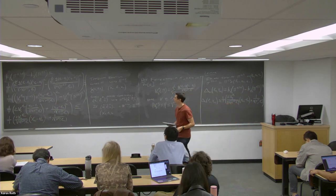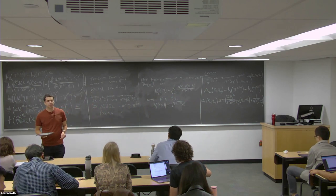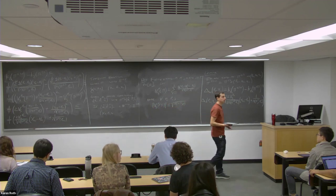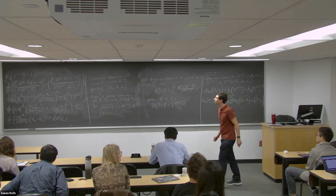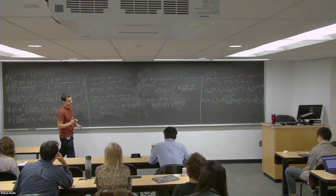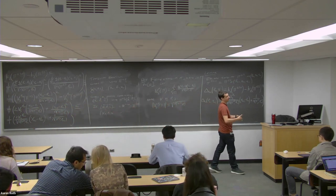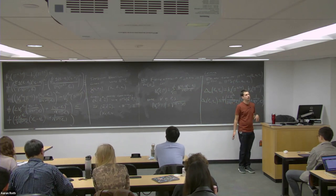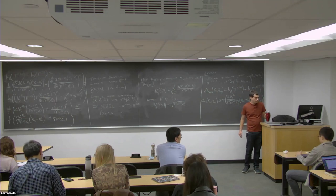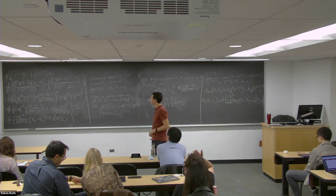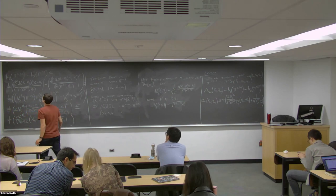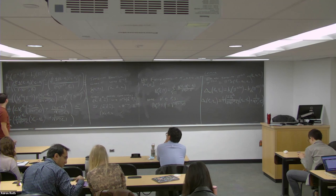We're about halfway there. Let's take a 15-minute break to stretch, then come back and use this lemma to derive an algorithm that guarantees calibration. The unnormalized version — without the 1/T factor — may be cleaner to work with; we can always divide by T at the end.